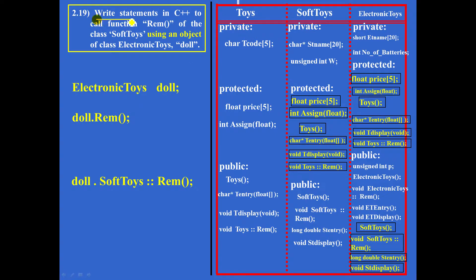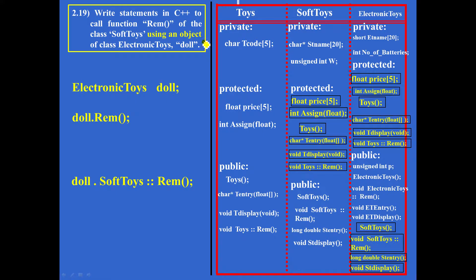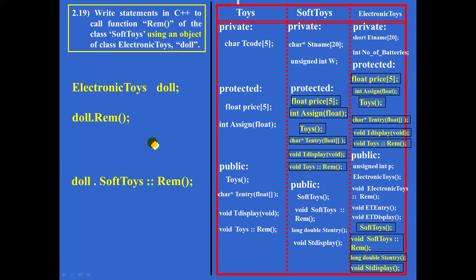So, to write the statement in C++ to call function remarks of the class soft toys using an object of class electronic toys (doll): using doll, the statement is written with the full qualified name — doll dot soft_toys::remarks. Please make a special note of this. It is an important type of question.